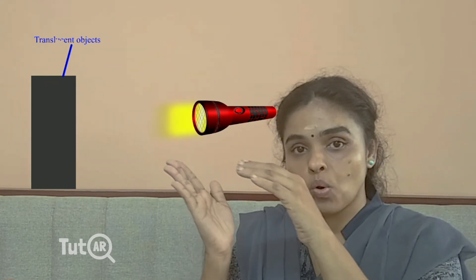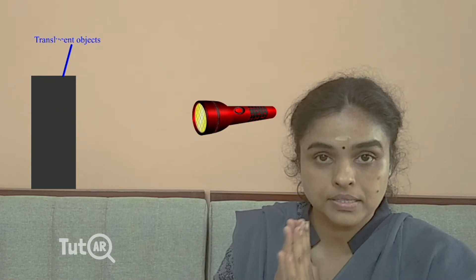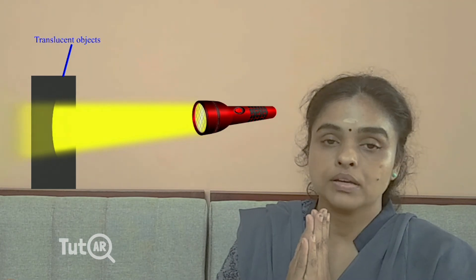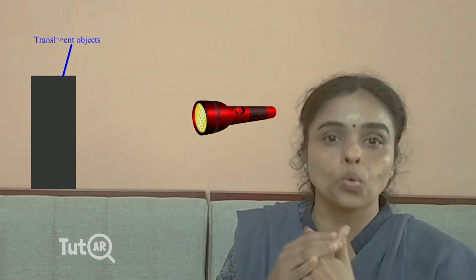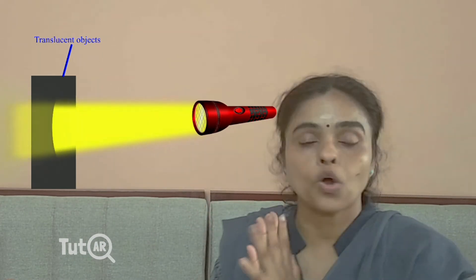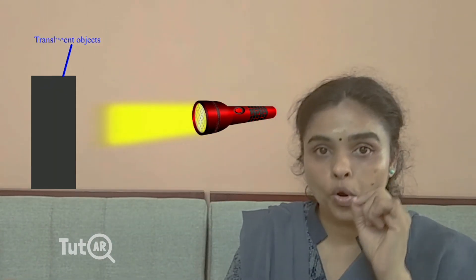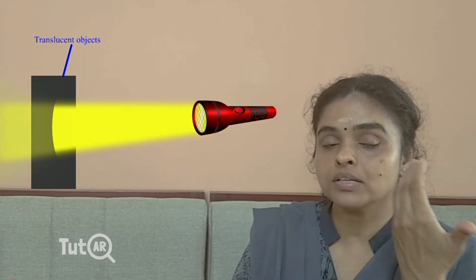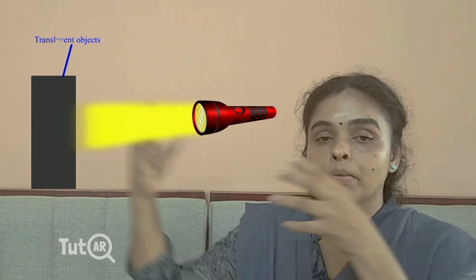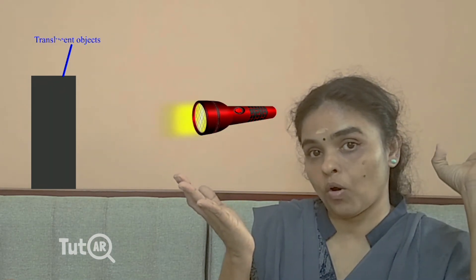Only a partial amount of light passes through them. Such materials are known as translucent objects. For example, designed glass and very thin transparent clothes belong to translucent objects. Translucent objects are defined as objects which allow the passage of light through them only partially. Observe the difference from opaque objects.